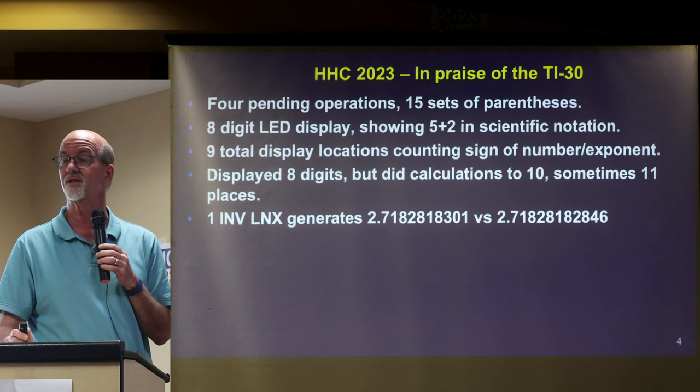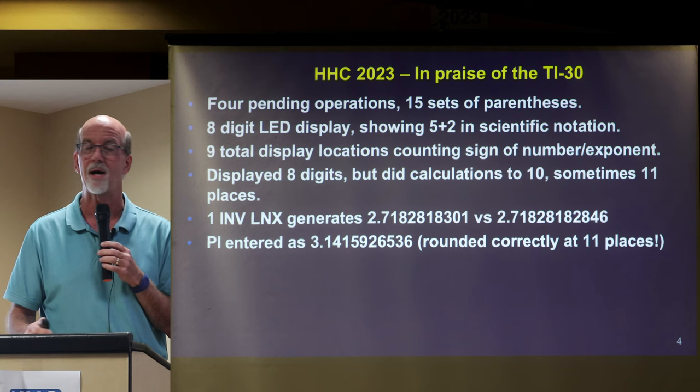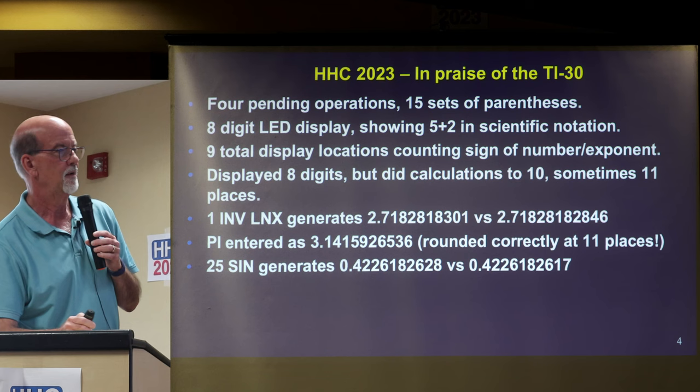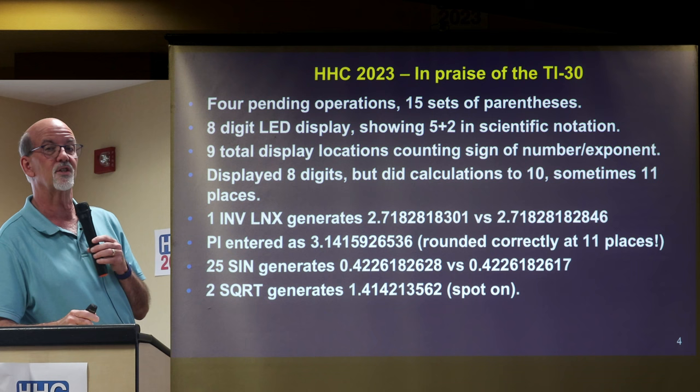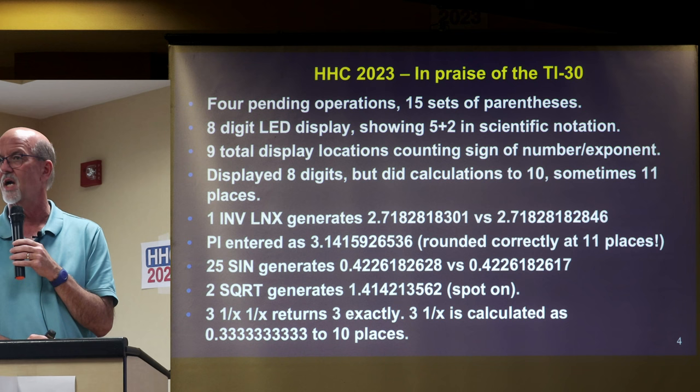The next digit is rounded accurately, which I was very, very surprised at. Pi is entered as 3.1415926536 — rounded correctly at 11 places. My favorite: I do the sine of 25 degrees — I have no idea why — but it came out fairly close. Two square root generated spot on to 10 places. And this was really strange: three reciprocal reciprocal didn't lose anything. It generated three back — subtract three from it and there's nothing remaining. So maybe some hocus-pocus going on behind the scenes.